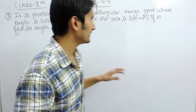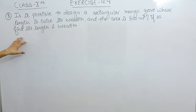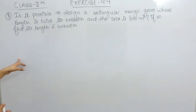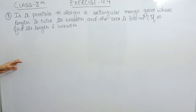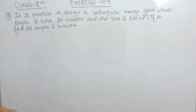Hello everyone. In this video we are going to solve question number 3 of exercise 4.4. The question is: is it possible to design a rectangular mango grove whose length is twice its breadth and the area is 800 meter square? If so, find its length and breadth.